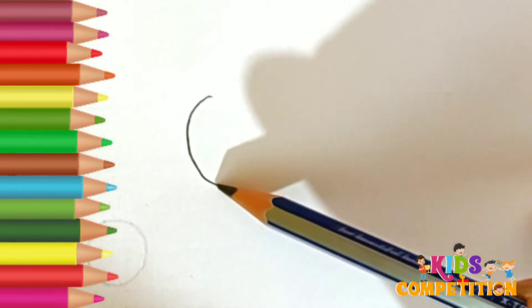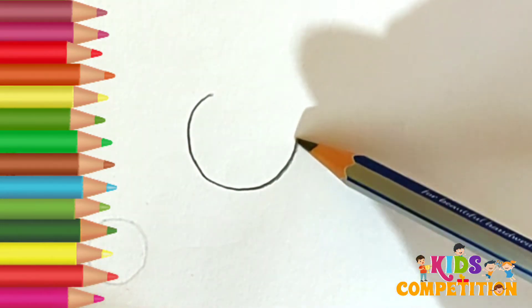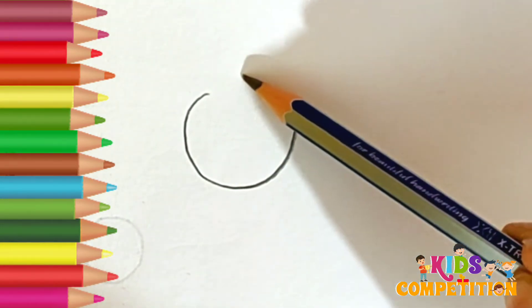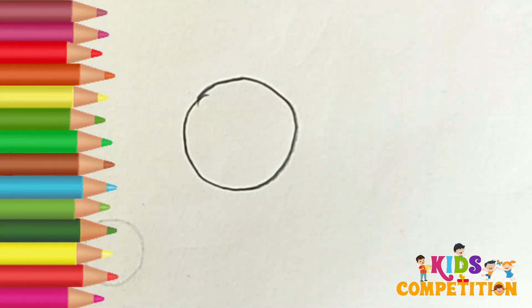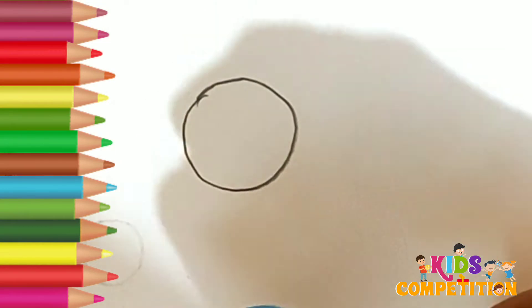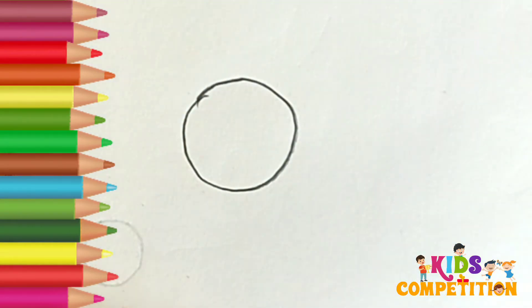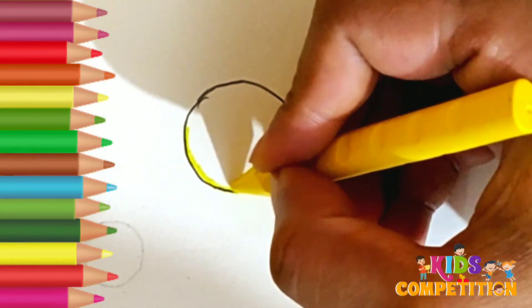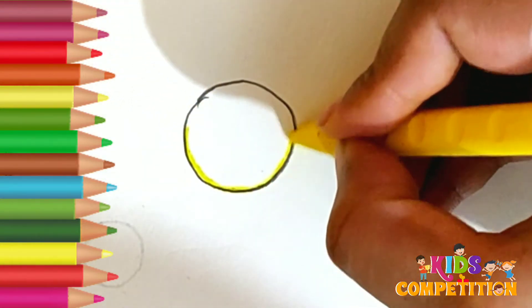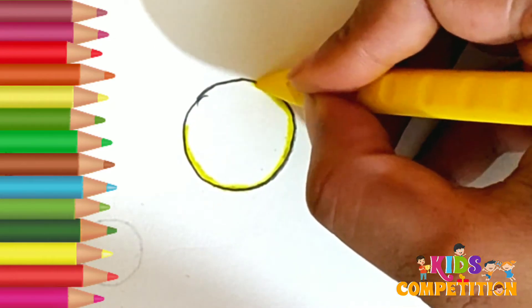First we will draw a circle. Then we will color it with yellow color as the sun is yellow in color.